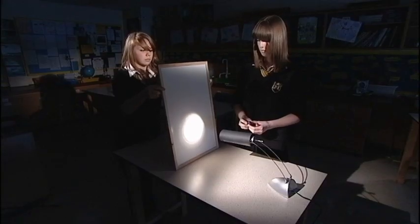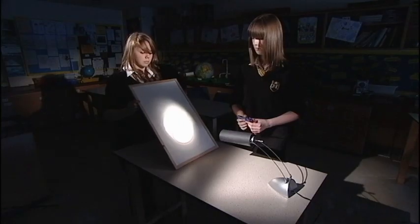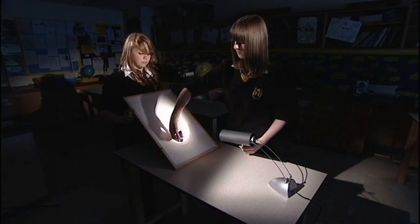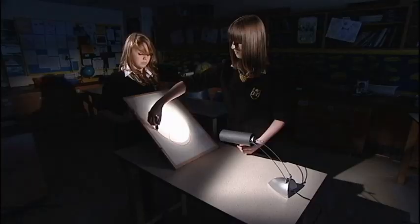By tilting the board backwards, you'll notice that the light spreads out into an ellipse, and the light is also not as bright as before. By drawing around the ellipse in a different color, you can compare it with the size of the original circle.